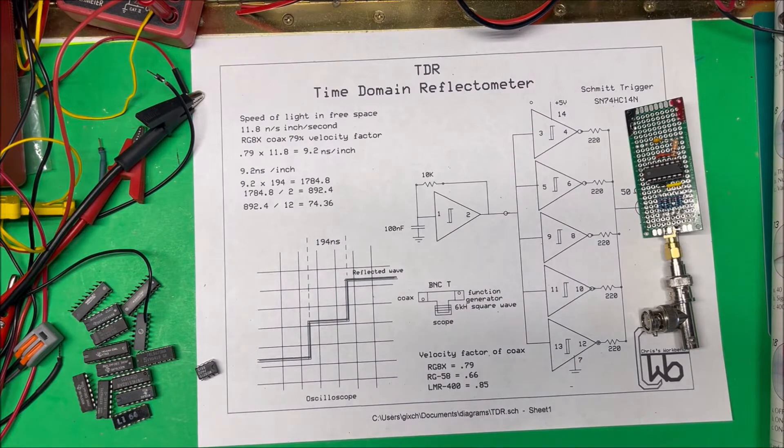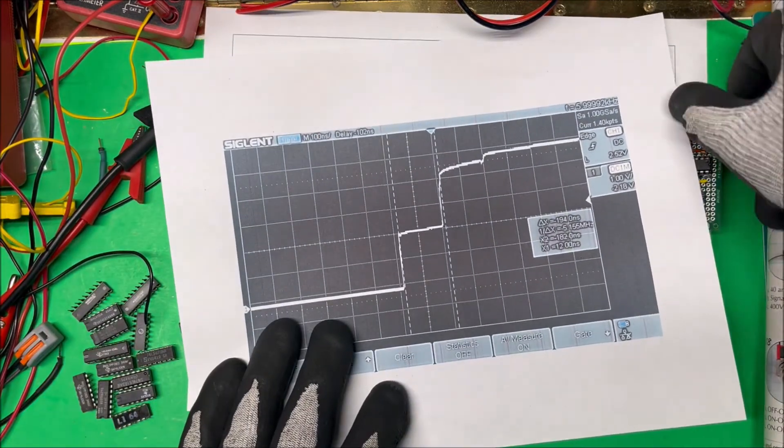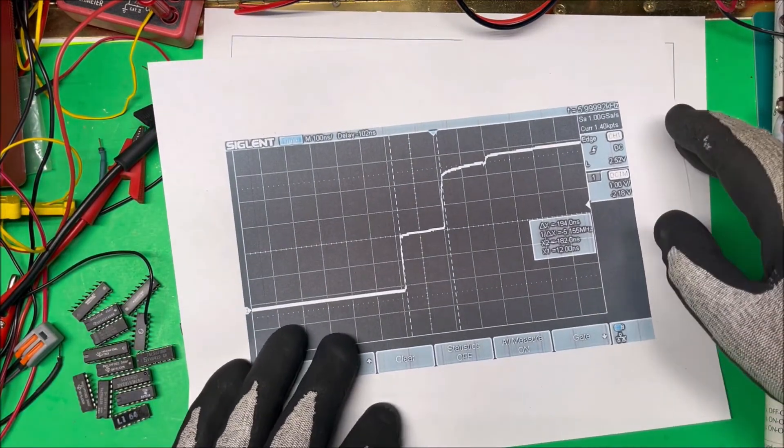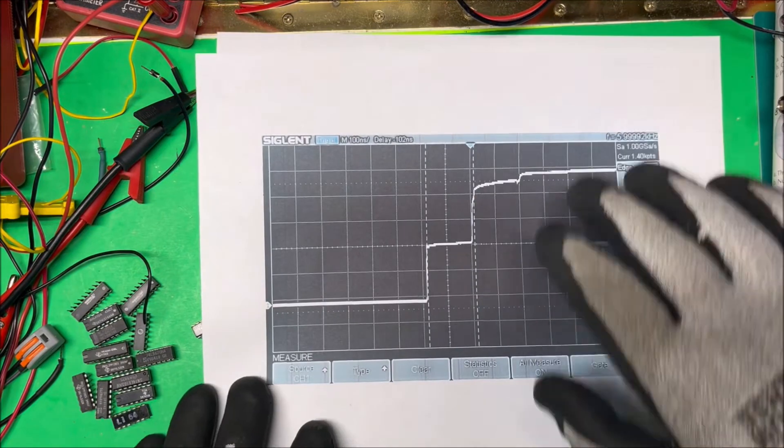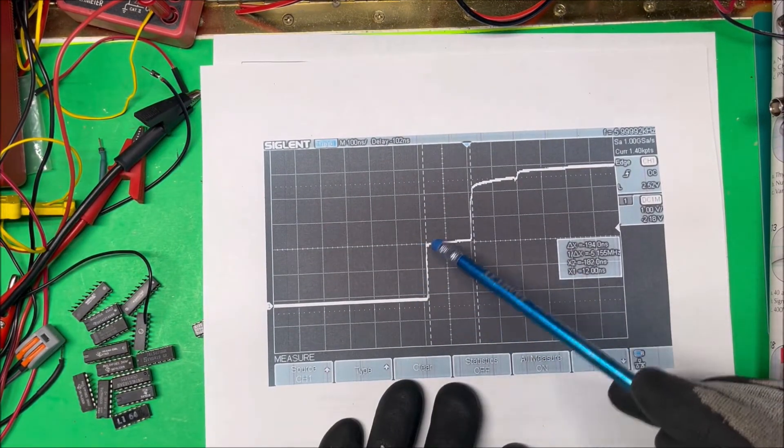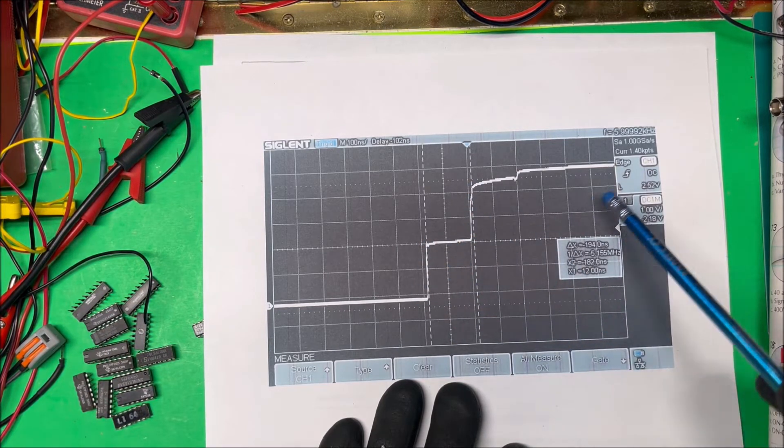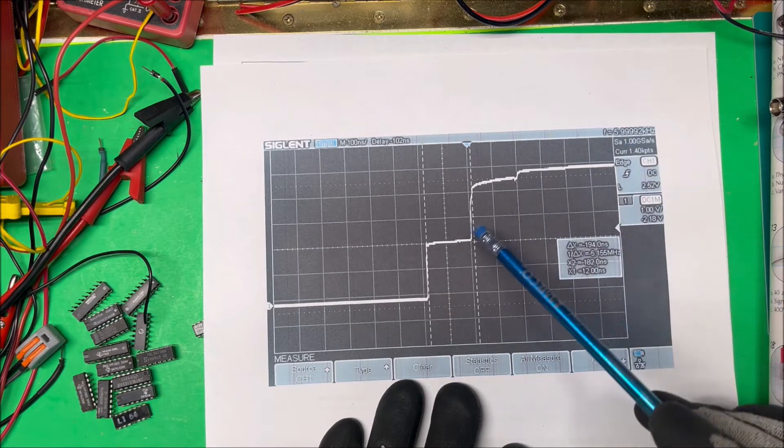Here it is on the scope. This is done with the signal generator and it does give us a nice sharp pulse here. And it's at about six kilohertz.